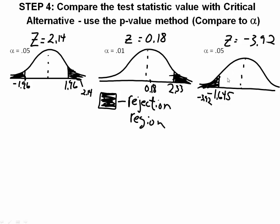In my final situation, which is a lower-tailed test, my alpha value is 0.05. With an alpha value of 0.05 in my lower-tailed test, my critical value is negative 1.645, and we saw this from the table in step two. So with my critical value being negative 1.645 and my z-value computed in step three being negative 3.92, I plot that and find that negative 3.92 is in the critical region. Therefore, the null hypothesis is going to be rejected.